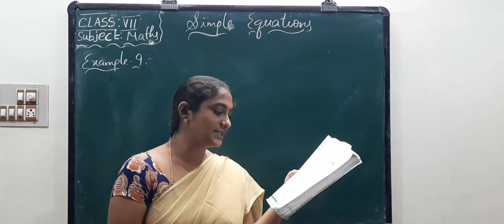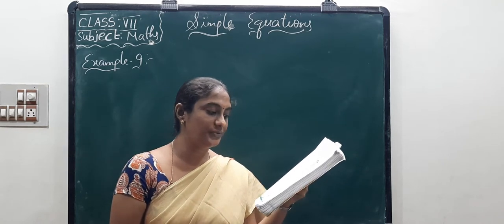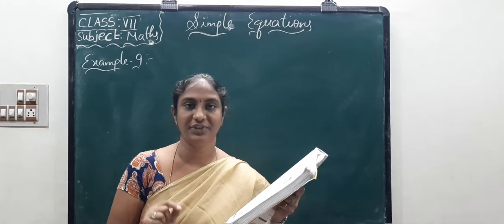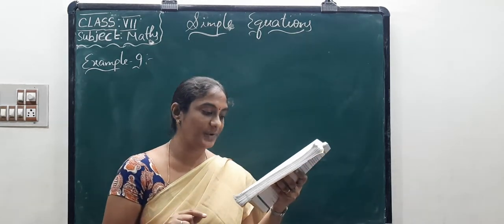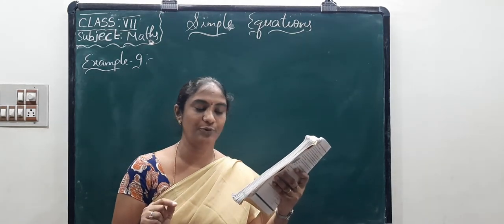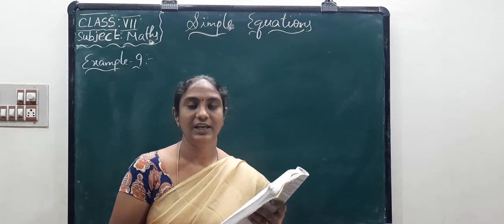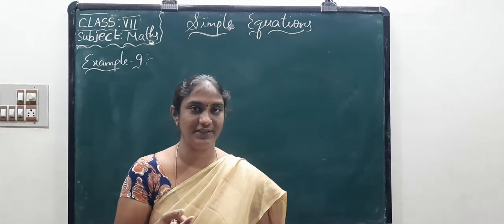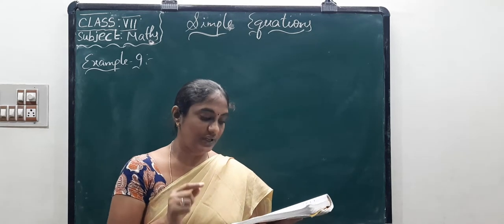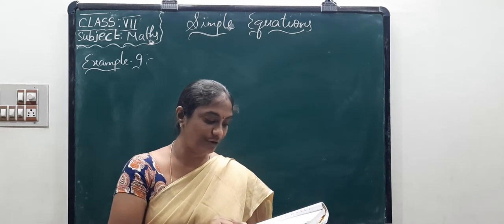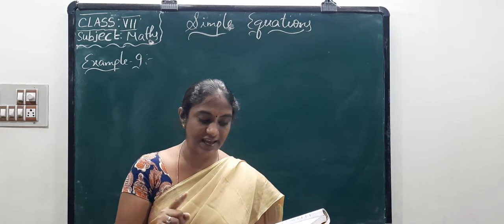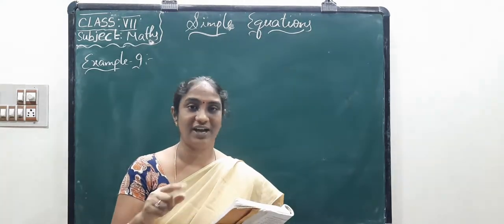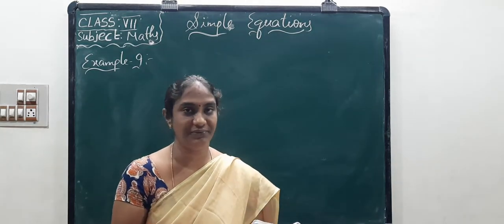A purse contains 250 rupees in the denomination of rupees 10 and rupees 50 — meaning the purse has 10-rupee notes and 50-rupee notes. Now, the number of 10-rupee notes is 1 more than the number of 50-rupee notes.